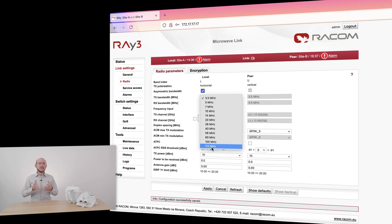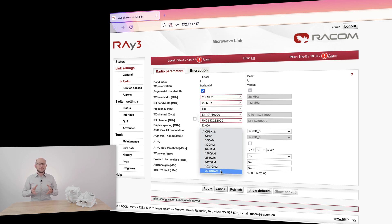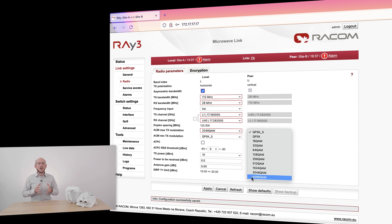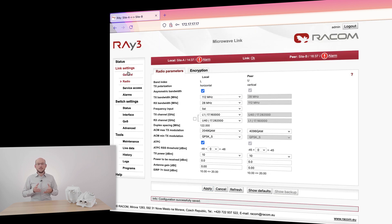In our case, we used asymmetric channels 112 MHz wide TX and 28 MHz wide RX to avoid interference. This setting, along with highest possible modulations, allows for 1 Gbps downlink and 200 Mbps uplink on the peer location.